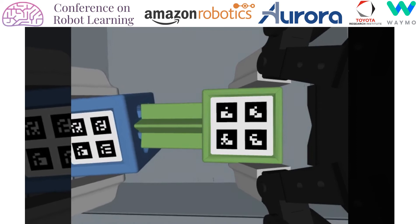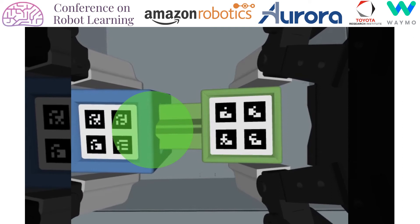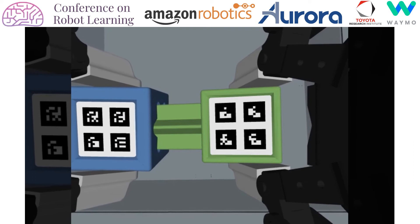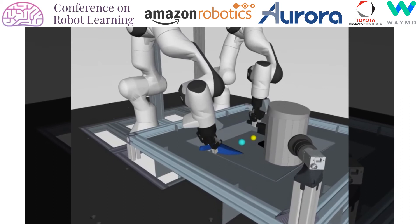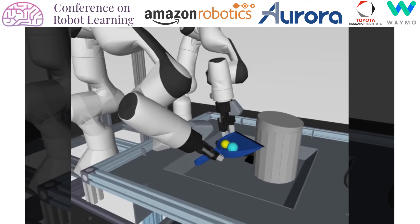Here is a clip from the wrist camera of the robot. The goal of the sweeping task is to use the brush and the dustpan to sweep up the two balls and place them in the trash can. Note that the desired behavior requires complex tool use and pressing down the pedal of the trash can to open the lid.